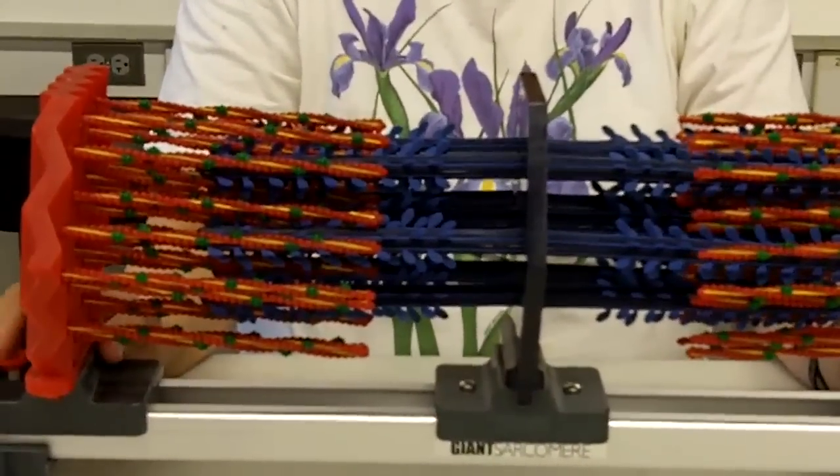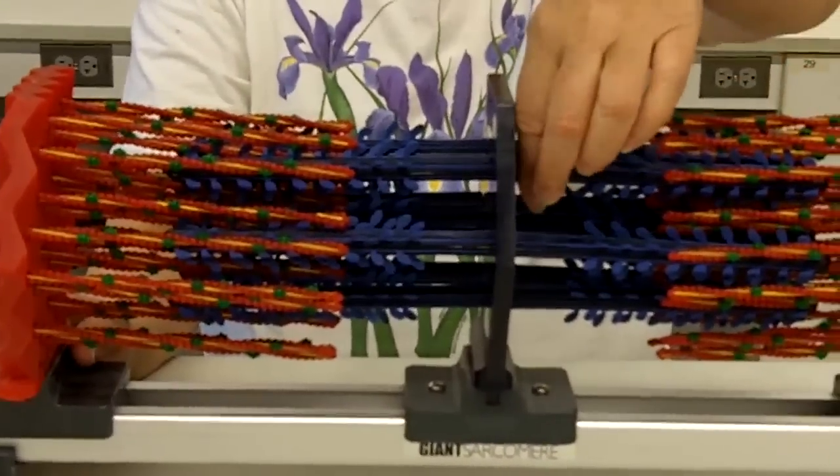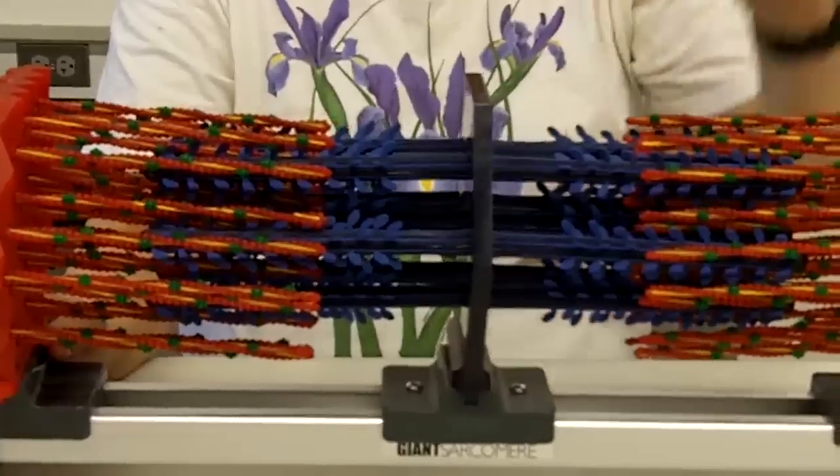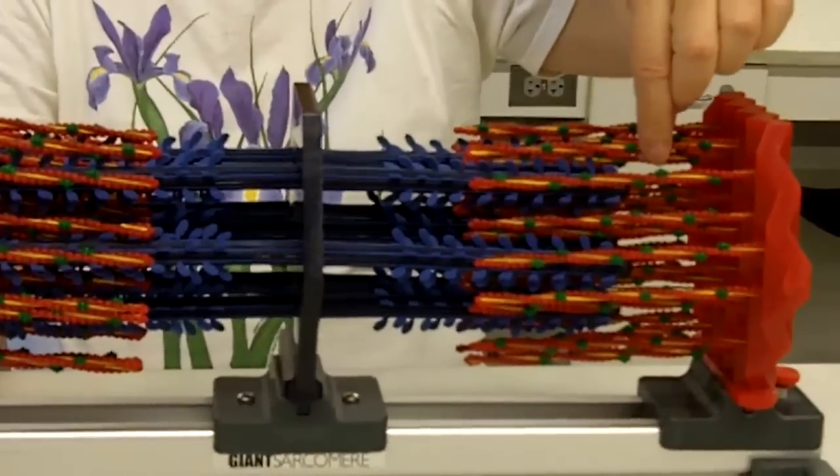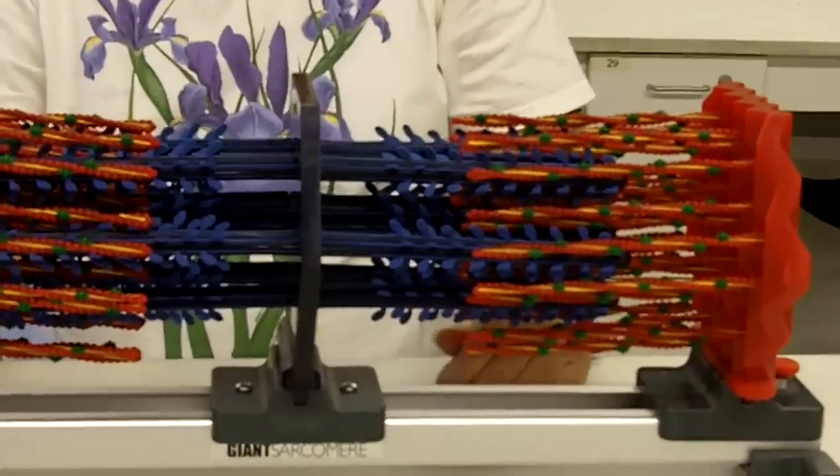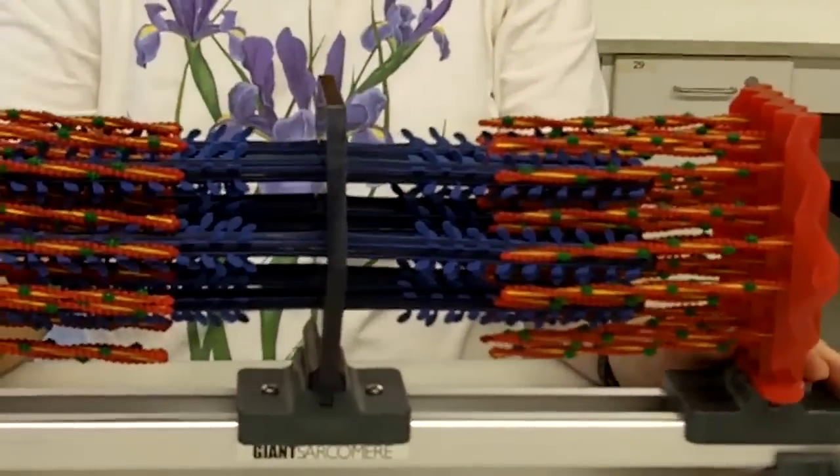Now, so what we have here: the thick filament is mainly myosin again. Thin filament is actin, troponin, and tropomyosin. We have banding because of this overlap.